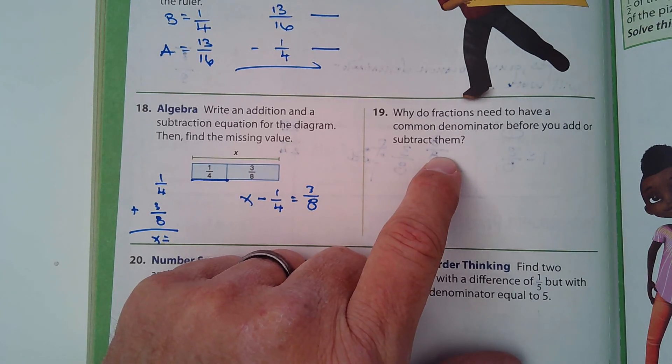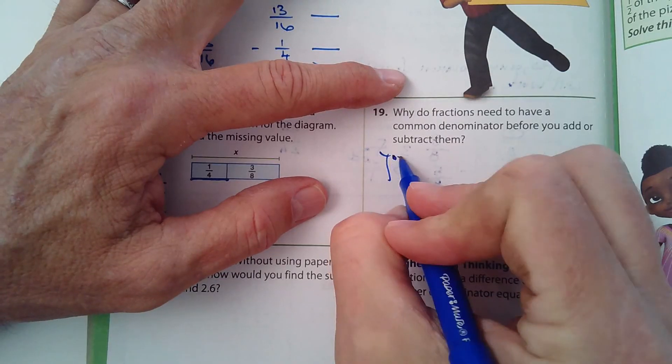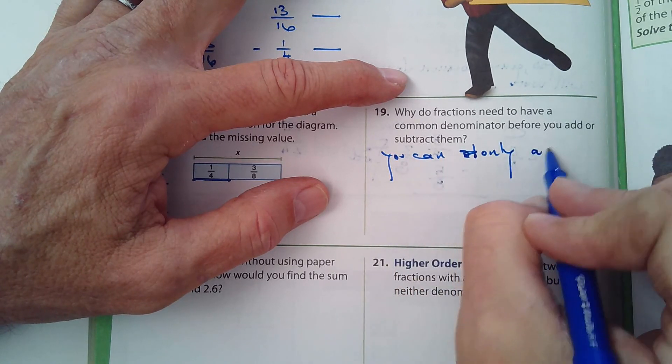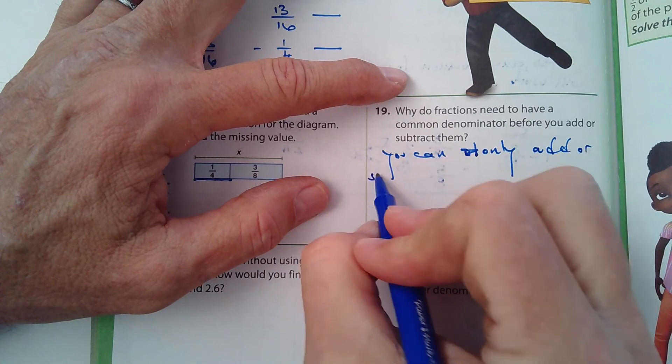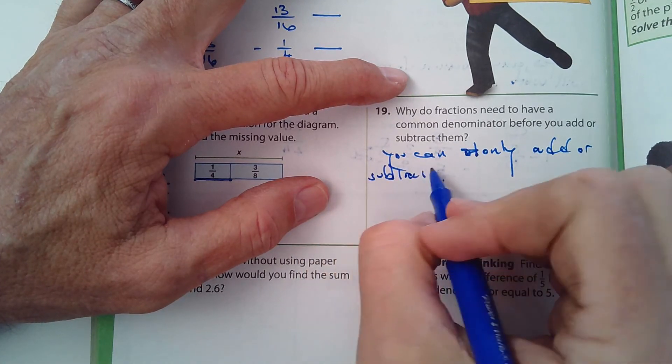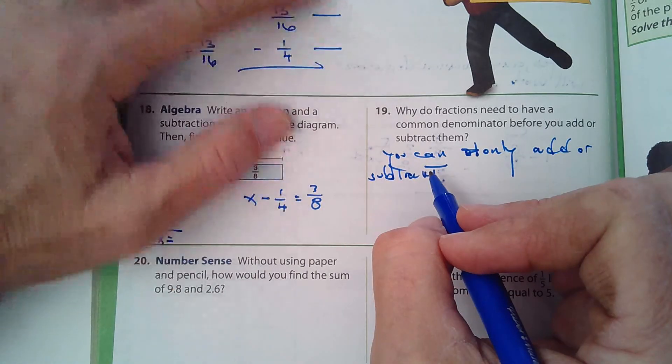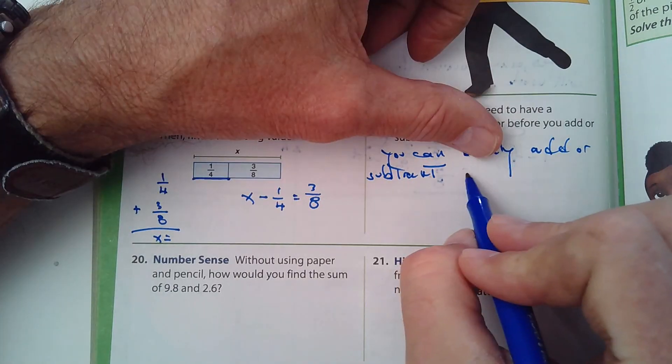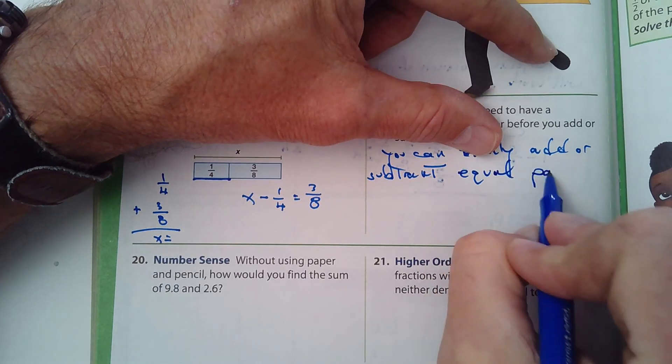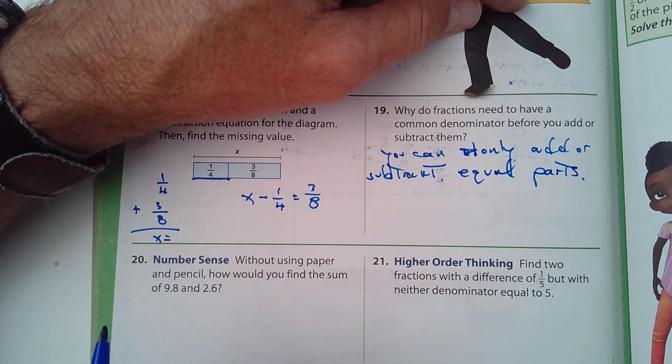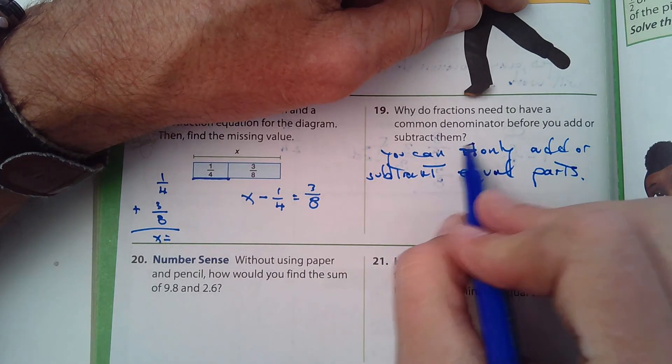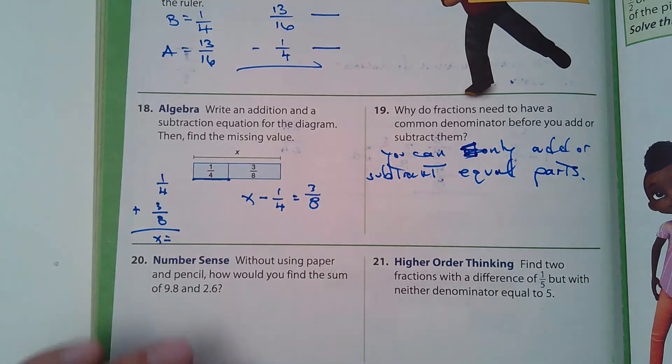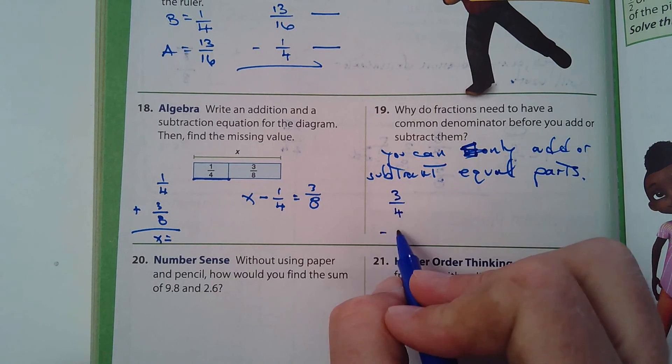Number 19. Why do fractions need to have a common denominator before you can add or subtract them? You can only add or subtract equal parts. I would say equal parts. Yeah, I think that works. I like that. You can only add and subtract equal parts. So, in other words,